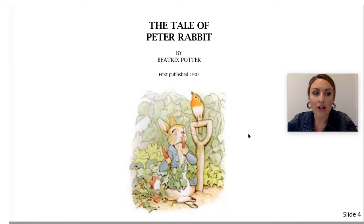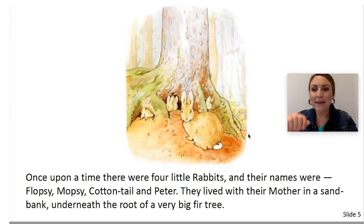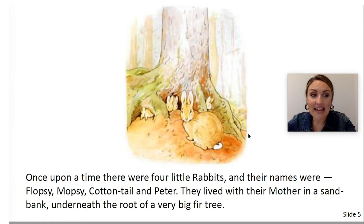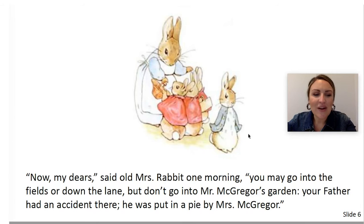Let's begin reading together. The Tale of Peter Rabbit, written and illustrated by Beatrix Potter. Once upon a time, there were four little rabbits, and their names were Flopsy, Mopsy, Cottontail, and Peter. They lived with their mother in a sandbank underneath the root of a very big fir tree. If you know the names of the characters in this story, I want you to hop up and down like a bunny rabbit would. What are the names of those characters? Flopsy, Mopsy, Cottontail, Peter, and their mother. Which names rhyme? Flopsy and Mopsy rhyme because they share the same ending sound — opsie.